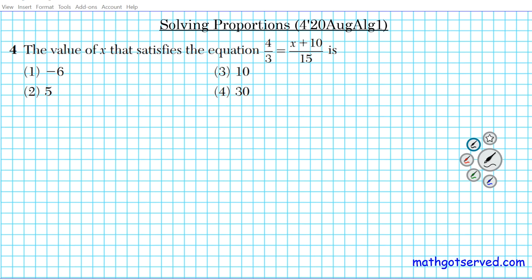In problem 4 we're being assessed on how to solve proportions — a statement that two ratios are equal. The problem reads: the value of x that satisfies the equation 4/3 = (x + 10)/15. We have 4 over 3 equals x plus 10 over 15. To get rid of the fractions we use the butterfly method, also known as cross multiplication: 3 gets multiplied by x + 10, and 4 is multiplied by 15.